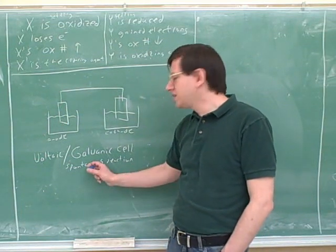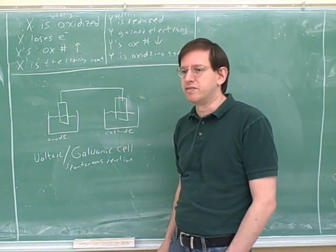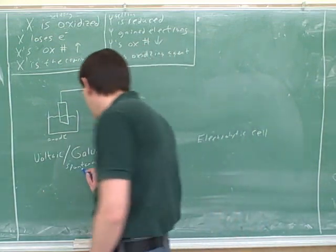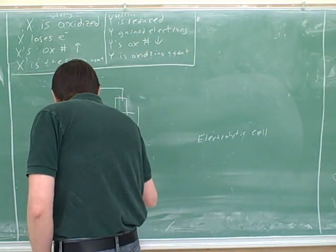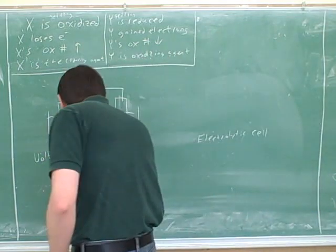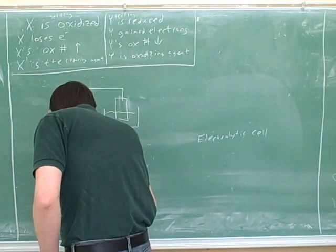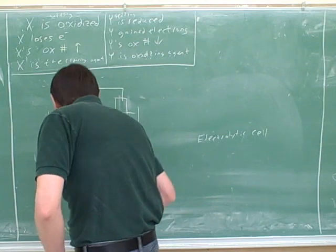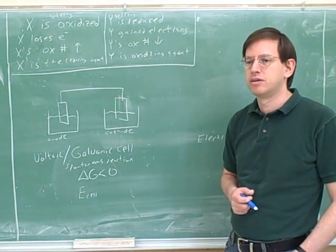Does that mean that the delta G here is going to be positive or negative? Negative. Good. Negative delta G means spontaneous. That's good. How about the cell voltage? Would that be negative or positive? Positive.